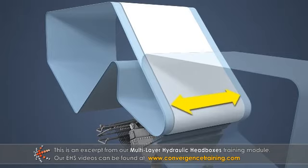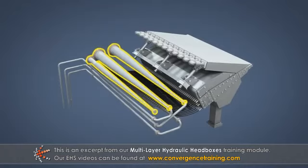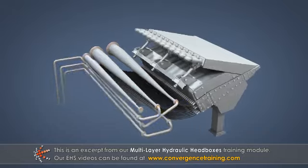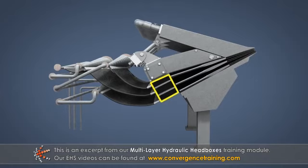These include tapered stock inlet headers equipped with recirculation valves and lines, turbulence elements such as banks of tubes, stilling or equalization chambers, drilled plates, and converging channels created by flexible sheets or vanes.